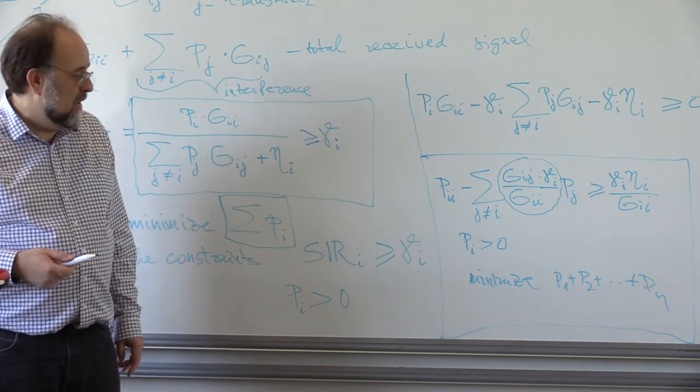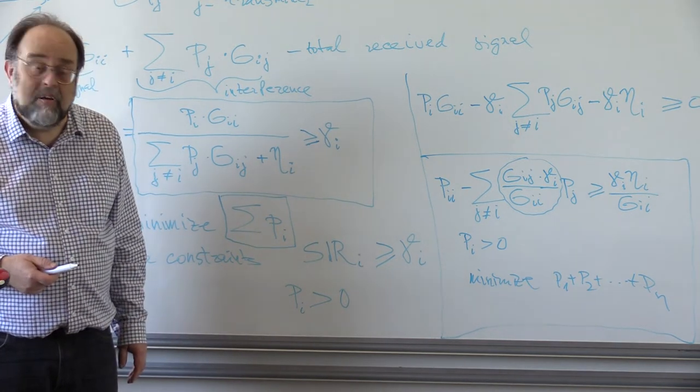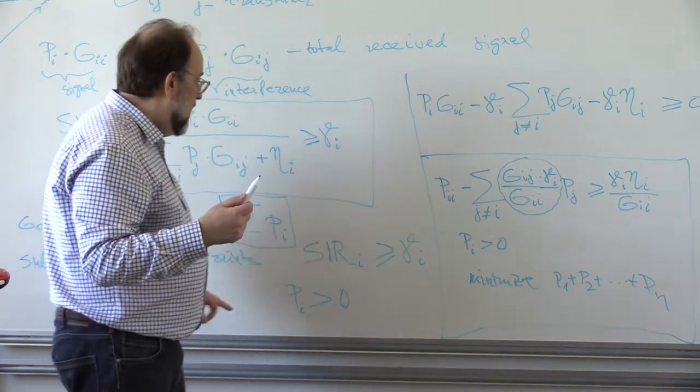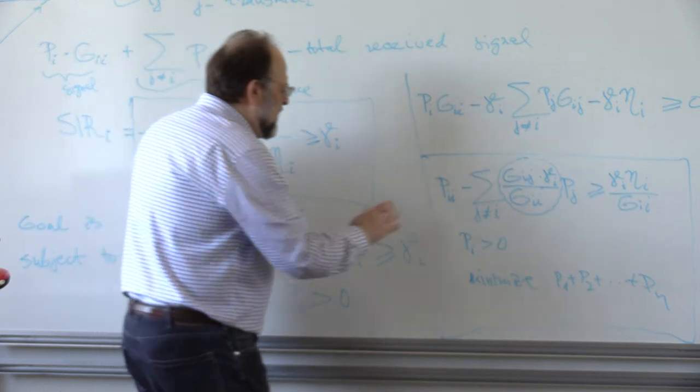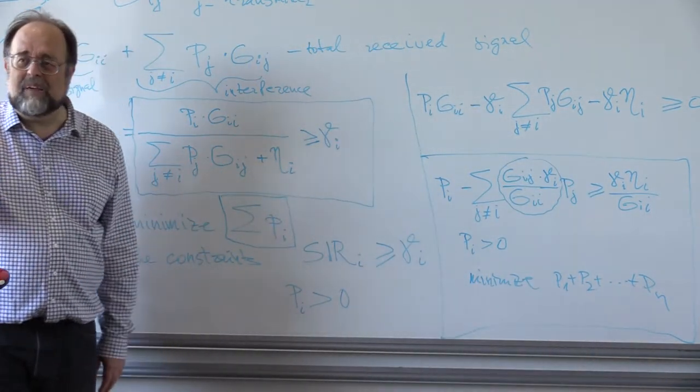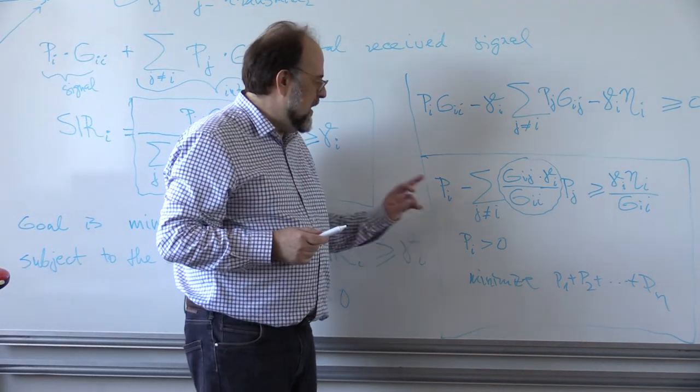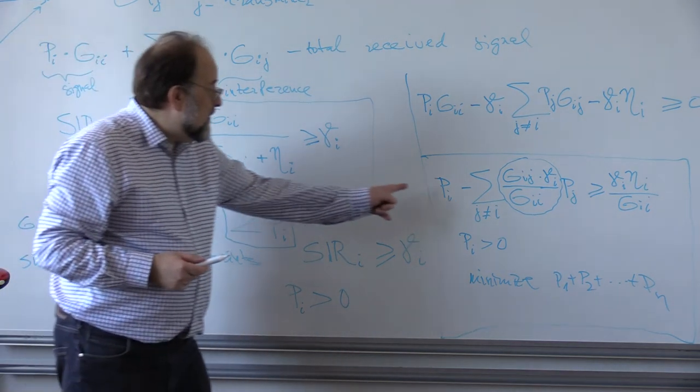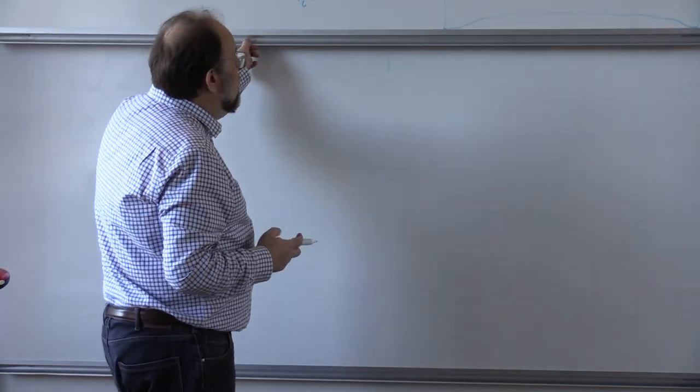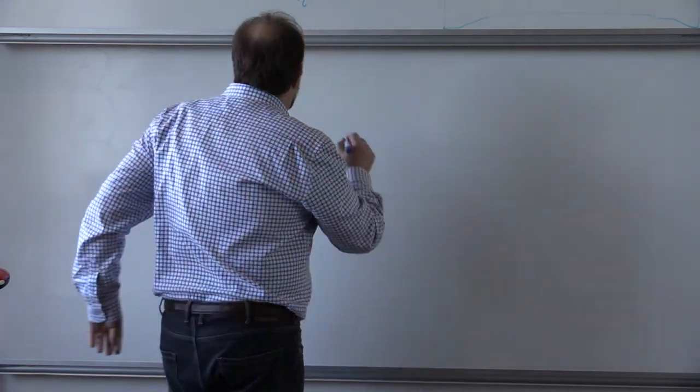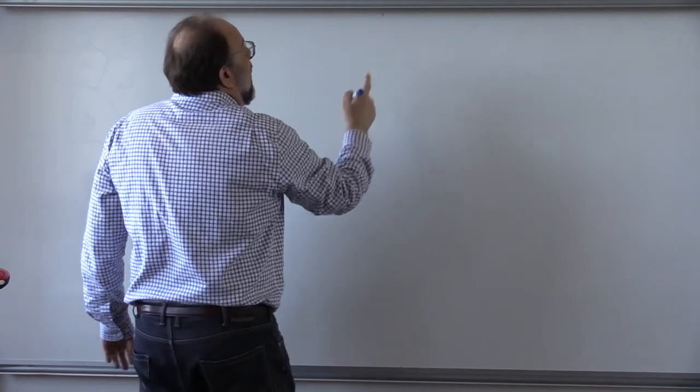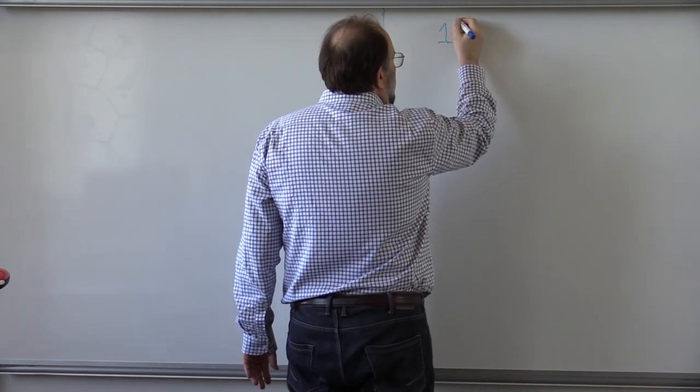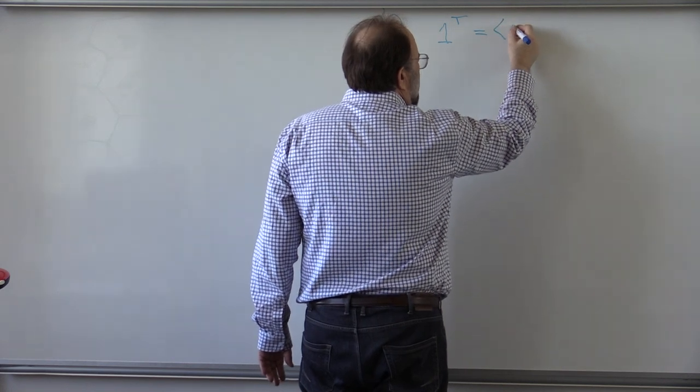On the constraint, why is it pi? Because I'm half asleep, thank you very much. It's pi only. Let's write this in a matrix form. What would be—let's write the constraint first. If we introduce a vector, let's call it one. What is one? It's a vector consisting of just ones.